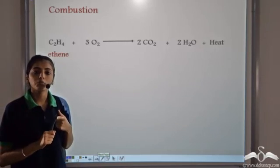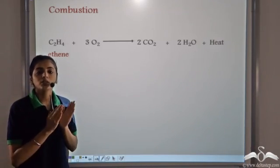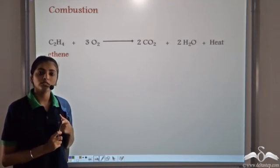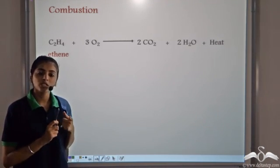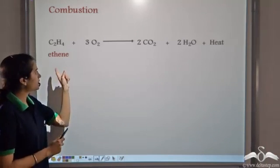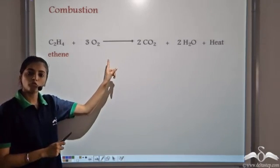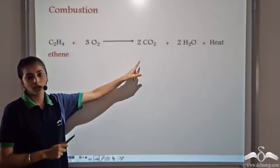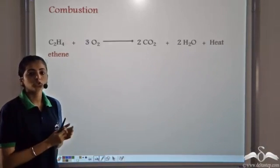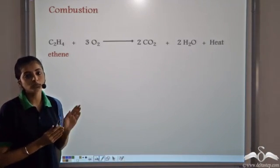All organic compounds on combustion give the same products — that is, burning an organic compound in the presence of oxygen releases carbon dioxide gas, water, and a lot of heat. So when ethene is burned in the presence of oxygen, it releases carbon dioxide, water, and heat. The products of the combustion reaction are the same for all organic compounds.